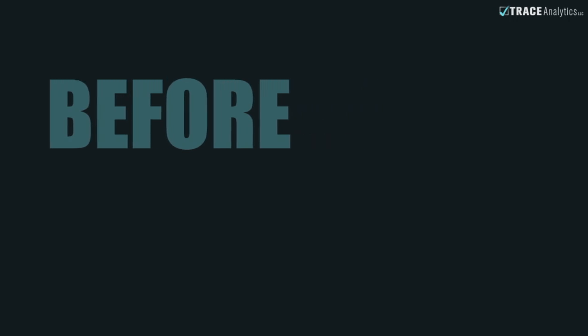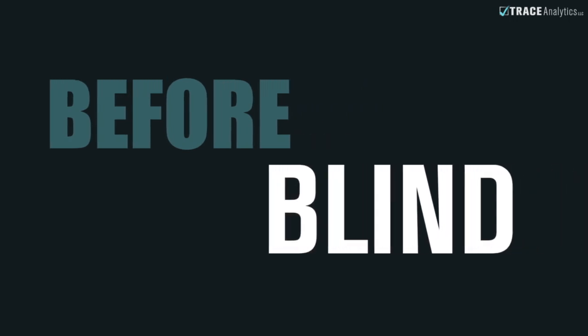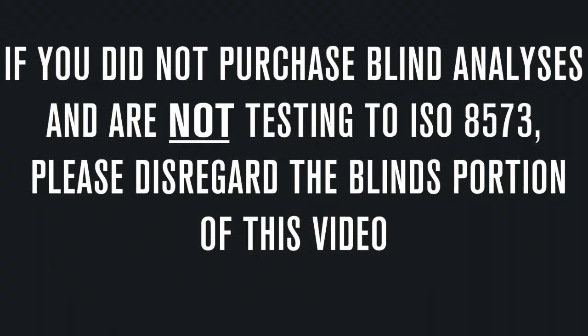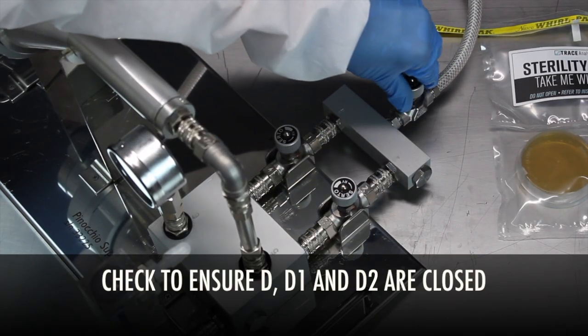Start by taking a blind. No air or gas is tested during the blind process. Knobs D, D1, and D2 should be completely closed.